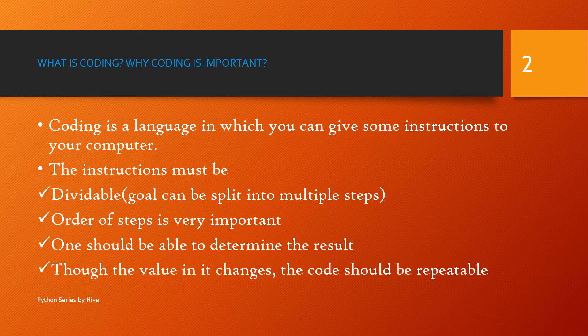Fourth, the code should be repeatable. For example, you write an addition program for 5 plus 5 and execute it. The next time, if you change the values to 5 plus 3, the answer should come up as 8. It should work any number of times. So to summarize: instructions must be dividable, ordered, able to determine the result, and repeatable.